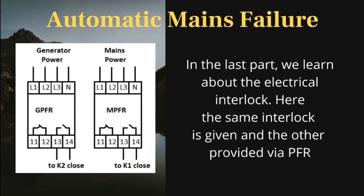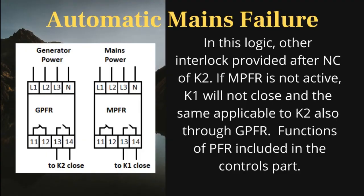In the last part, we learned about the electrical interlock. Here the same interlock is given, with the other interlock provided via PFR. In this logic, the other interlock is provided after the NC contact of K2. If MPFR is not active, K1 will not close, and the same applies to K2 through GPFR. Functions of PFR are included in the controls part.